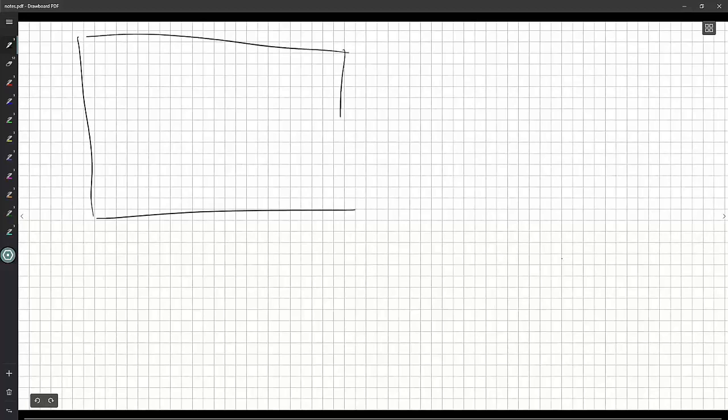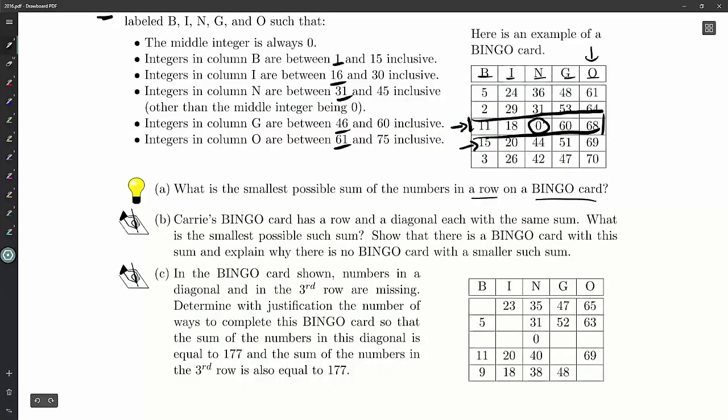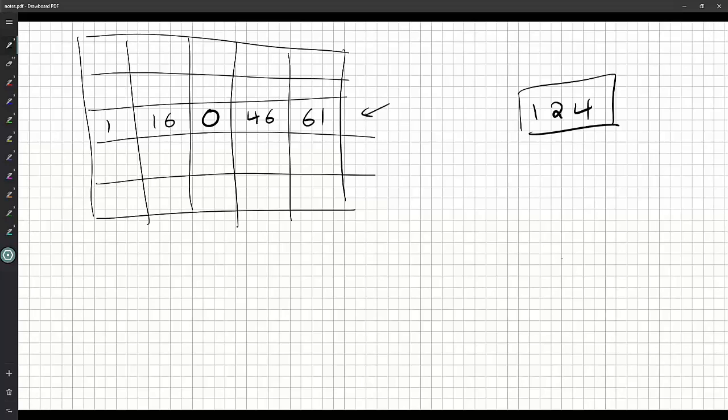But remember in this third column, if we pick the right row, then we can use this zero, which is much less than 31. So the smallest sum, if we just use the middle row, we can put a zero here. And I can put a 1 here, a 16 here. Don't need the 31, but we can go to 46 and 61 here. We can get a sum here: 1 and 16 is 17, carry the 1, so 124 is the smallest sum.